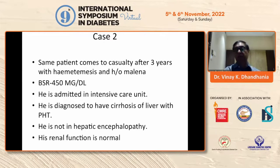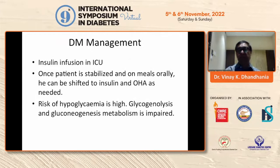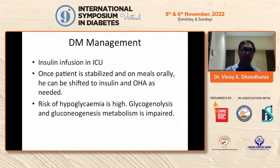The same patient presents to casualty three years later with hematemesis and history of melena, with random blood sugar 450 mg/dL. He was admitted to the ICU, diagnosed with cirrhosis of liver with portal hypertension but not in hepatic encephalopathy; renal functions were normal. He was given insulin infusion to control his diabetes. Once stabilized and taking meals orally, he was shifted to oral anti-diabetic drugs from insulin as needed, with basal insulin added along with oral hypoglycemic agents.